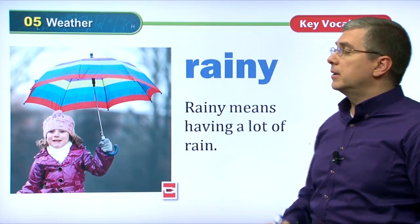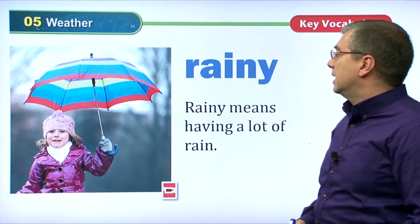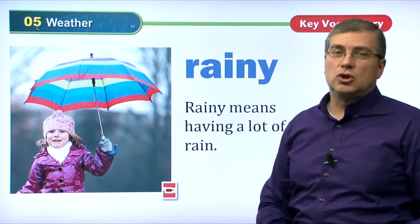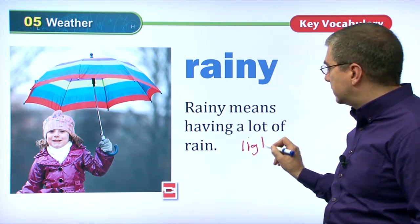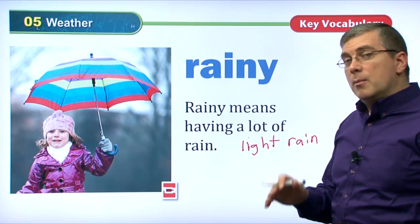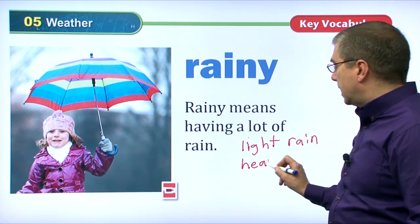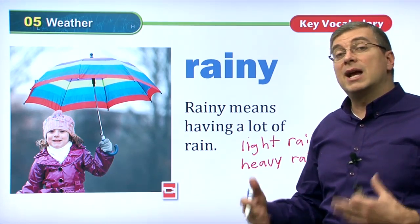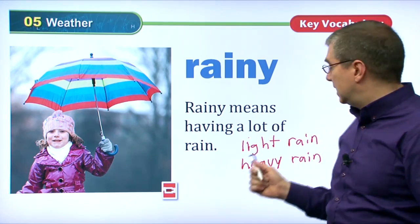Another type of weather — personally, I don't like rainy days. If it's rainy, it means there's a lot of rain coming down. On a rainy day, you should bring an umbrella. We can talk about light rain — that's when just a little bit of rain is coming down. But when a lot of rain comes down, like in the summertime, we say that is heavy rain. You can describe it as light rain or heavy rain depending on how much is coming down.